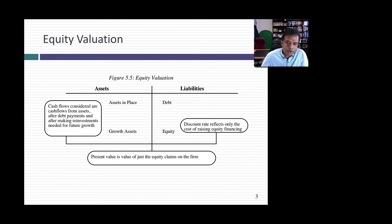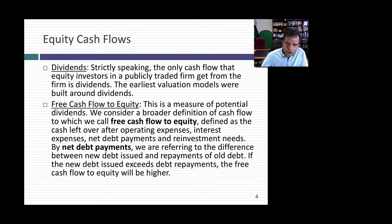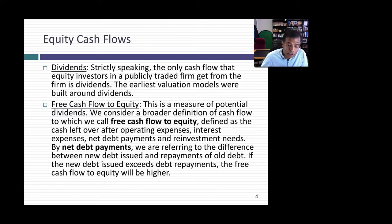The cash flows to equity are cash flows left over after every conceivable need has been met. But if you're a stockholder in a publicly traded company, the cash flow you generally receive is a dividend. The dividend is the manager's discretionary judgment on how much the company can afford to pay out. The earliest discounted cash flow models to value equity were built around dividends. When you use the dividend discount model, you're assuming that what gets paid out — the dividends — is what the company can afford to pay out.